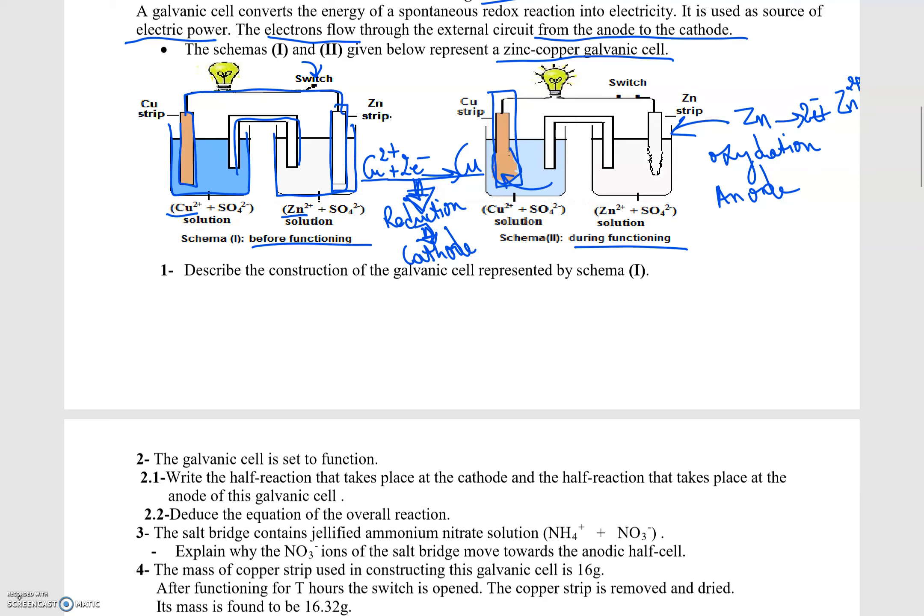Question 2: The galvanic cell is set to function. Write the half-reaction that takes place at the cathode and the half-reaction that takes place at the anode of this galvanic cell. Since we have studied which one is the anode and which one is the cathode, we write the half-reaction happening at the anode: Zn → 2e⁻ + Zn²⁺. And at the cathode we have Cu²⁺ + 2e⁻ → Cu.